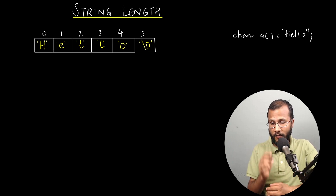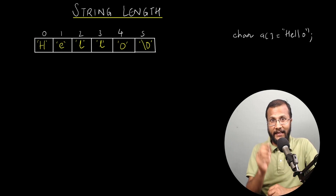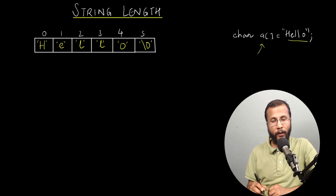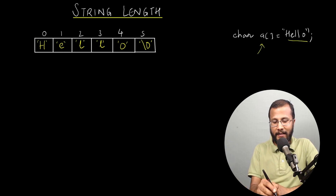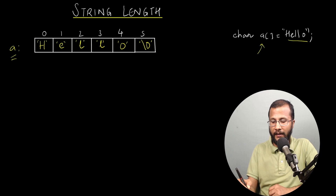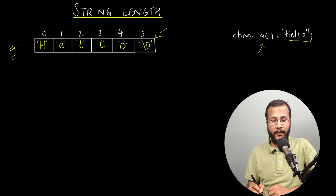Let's try to see the logic for the same. Let's say that you have the character array a, which is storing the string "hello". So a is represented in memory like this: h, e, l, l, o, and you'll have the null character at the end of the string.